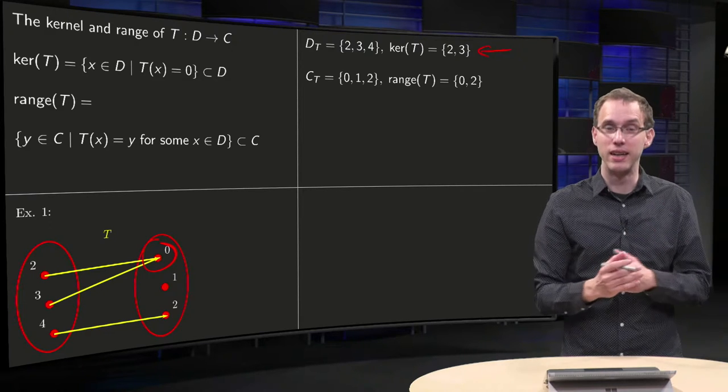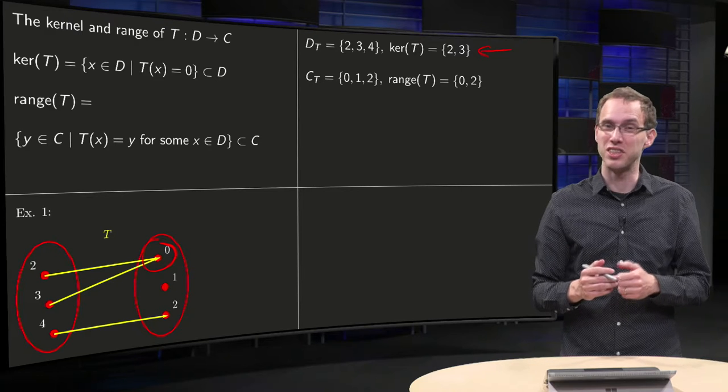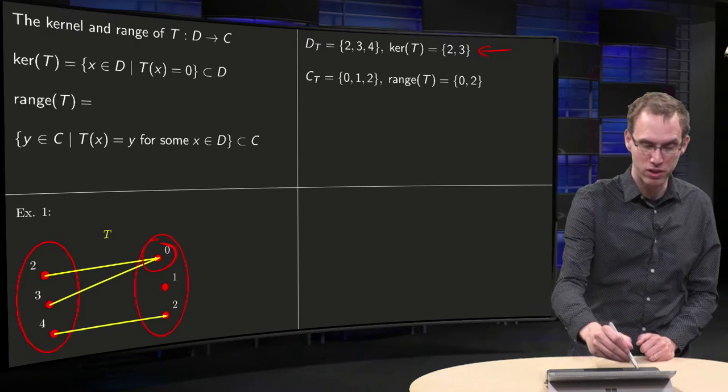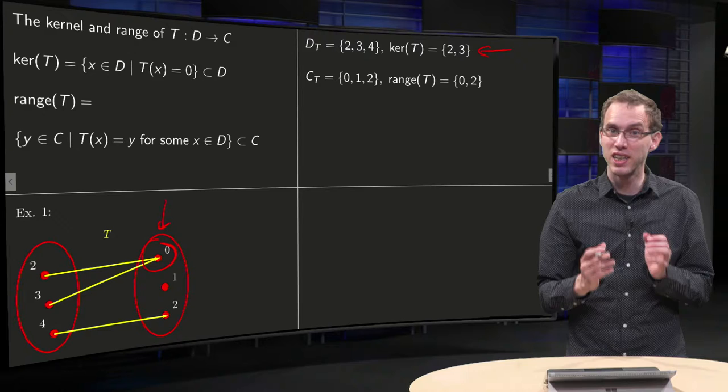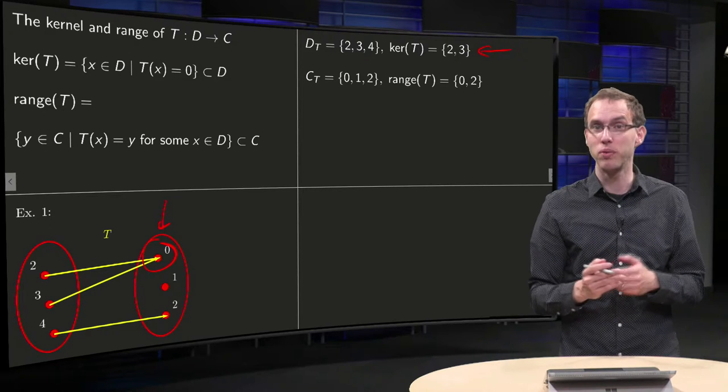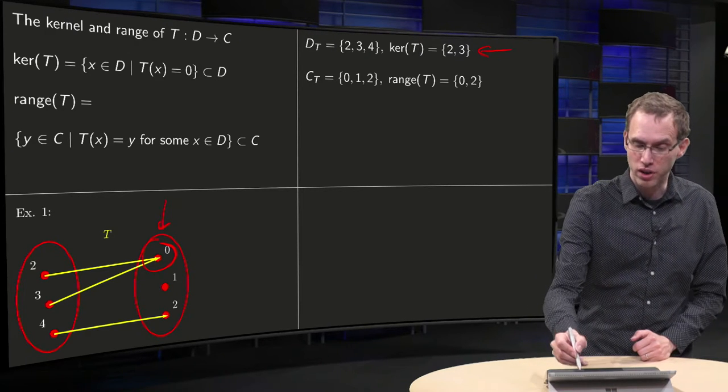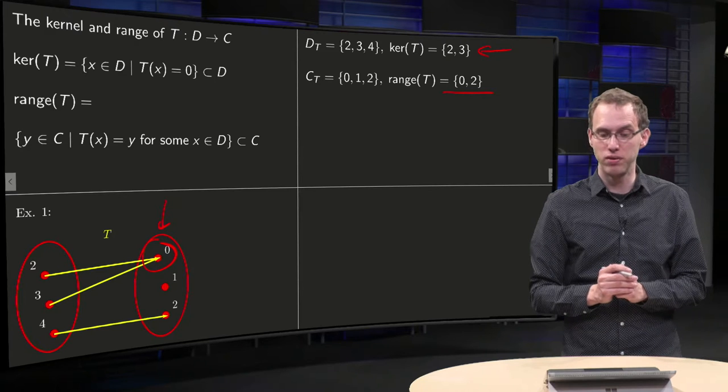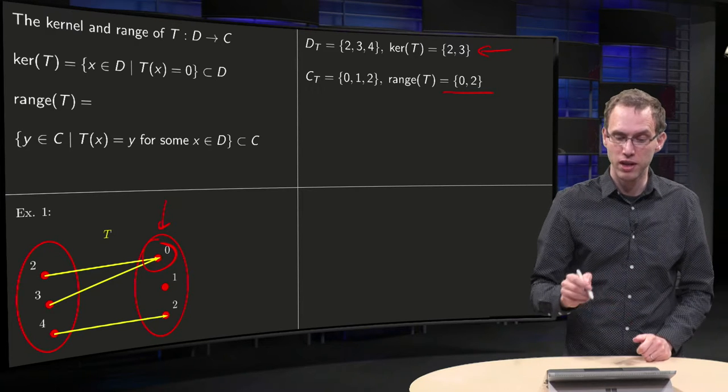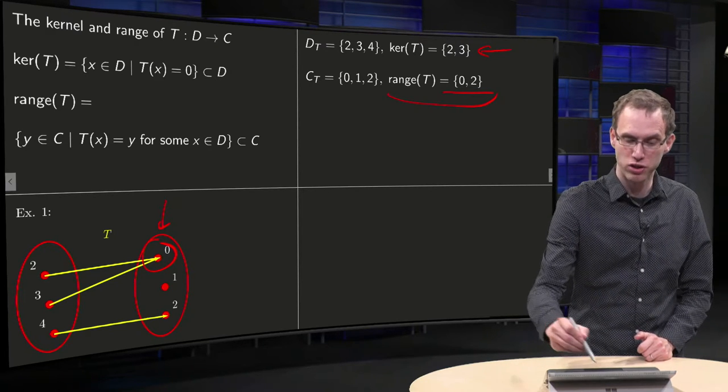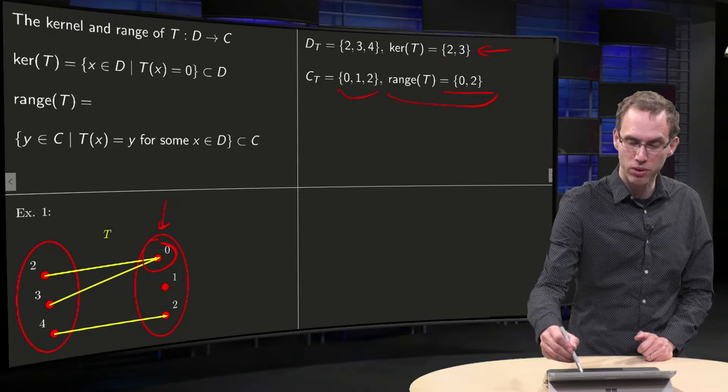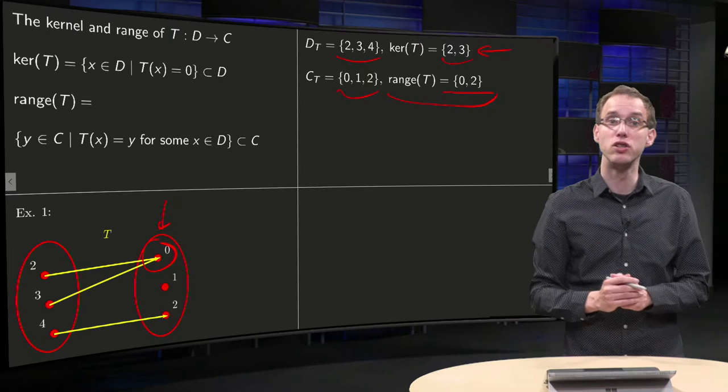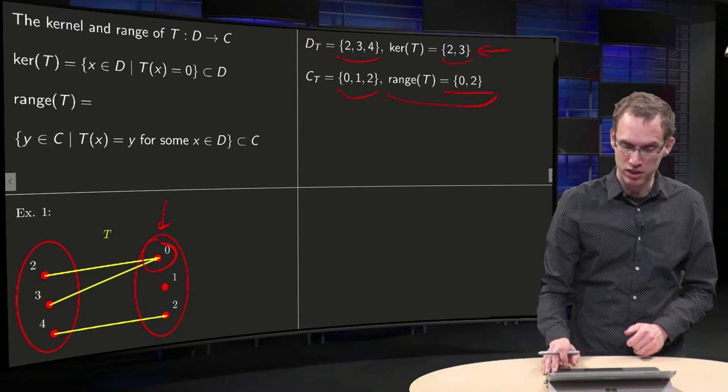What's the range of our function? That's the set of values in the codomain that we can actually reach. You see, we cannot reach 1, we can only reach 0 and 2, so the range of our function T will be 0, 2. You see indeed the range is a subset of the codomain and the kernel is a subset of the domain of the function T.